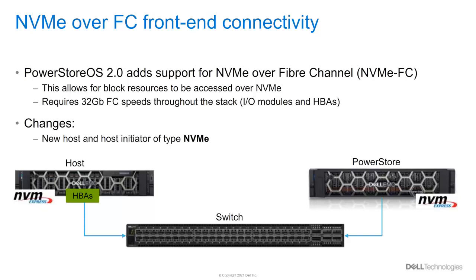PowerStore OS 2.0 adds support for NVMe over Fibre Channel, or NVMe FC. This allows block resources to access data over NVMe. It requires 32-gigabit Fibre Channel speeds throughout the stack, including the IO modules and the host HBAs. One of the main changes is a new host and host initiator of type NVMe. We will provide an example of how to leverage NVMe as part of the demonstration.